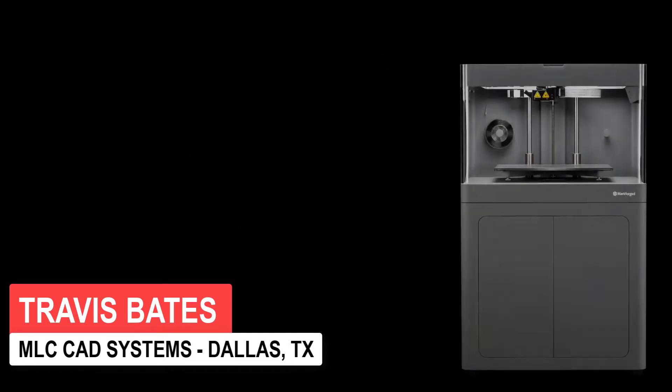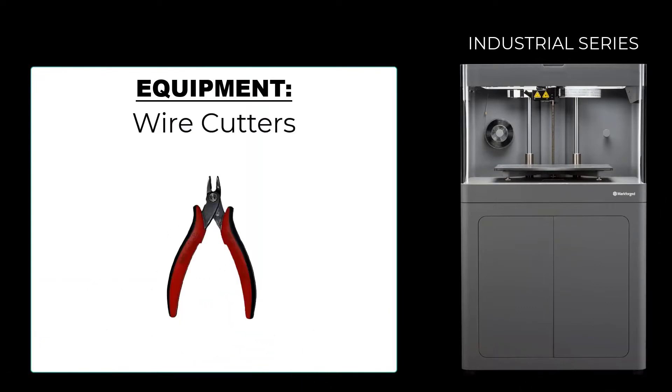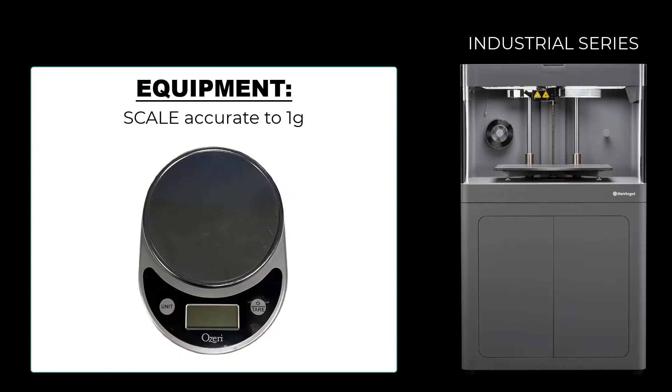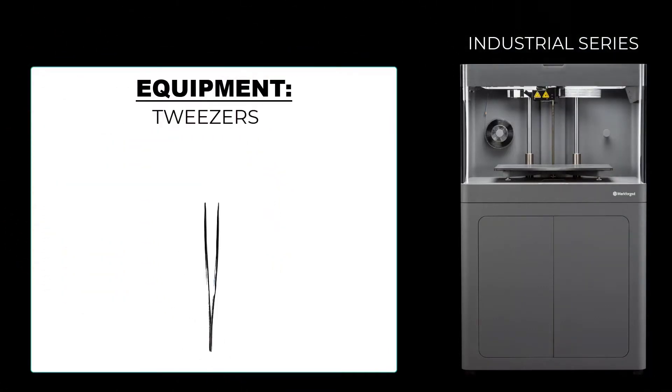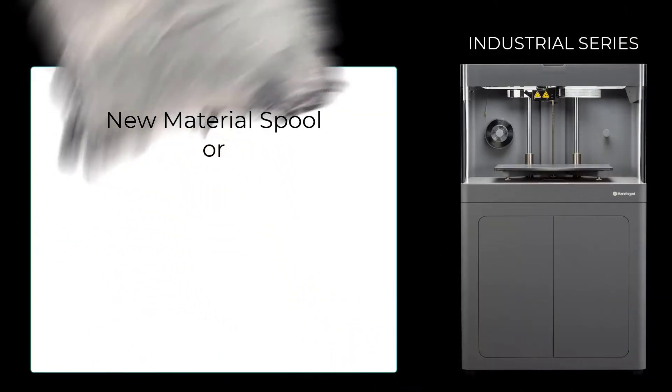Loading Plastic Material on the Markforge Industrial Series Printers. You will need a pair of wire cutters, a scale accurate to 1 gram, tweezers, and a new spool or used partial spool of material.